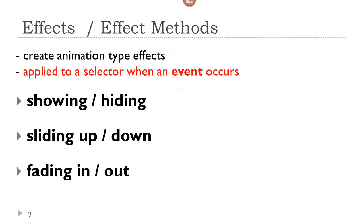In order to call that method, it is called using an event, such as a click. There are three basic categories under which effects can be placed. The first is hiding and showing. The second is sliding up and down. The third is fading in and out.